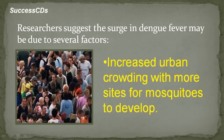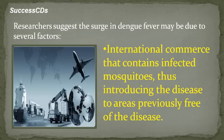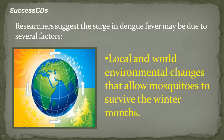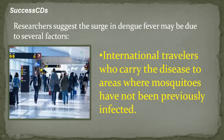Researchers suggest the surge in dengue fever may be due to several factors: increased urban crowding with more sites for mosquitos to develop; international commerce that introduces infected mosquitos to areas previously free of the disease; local and world environmental changes that allow mosquitos to survive the winter months; and international travelers who carry the disease to areas where mosquitos have not been previously infected.